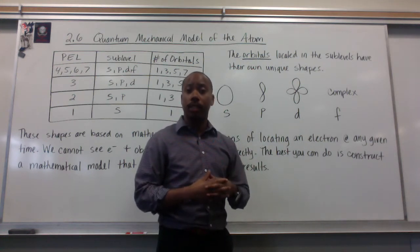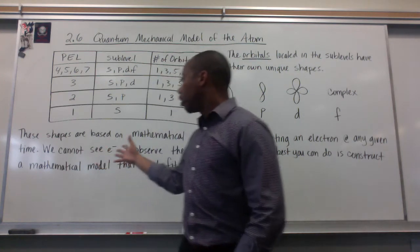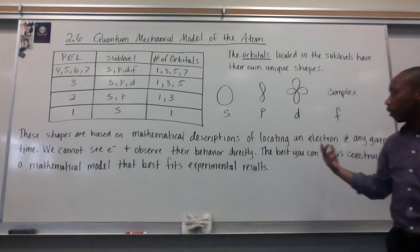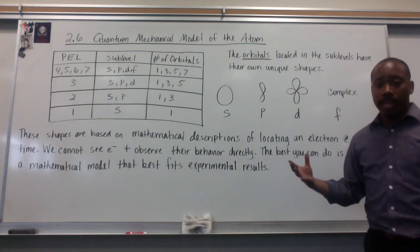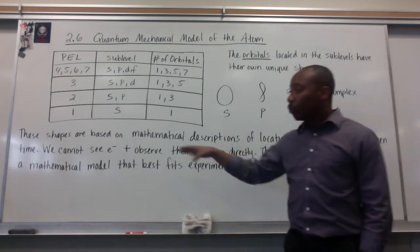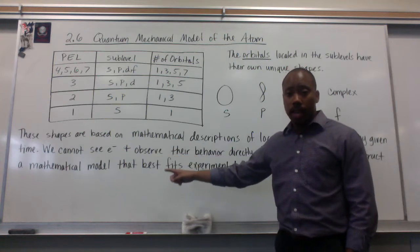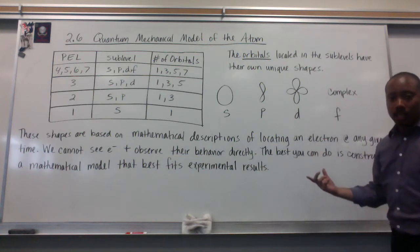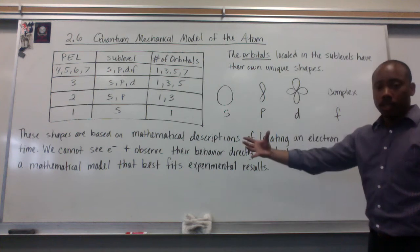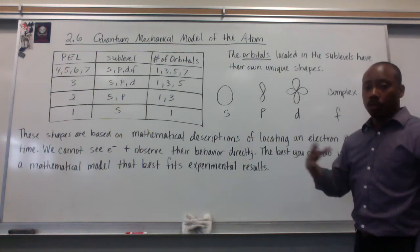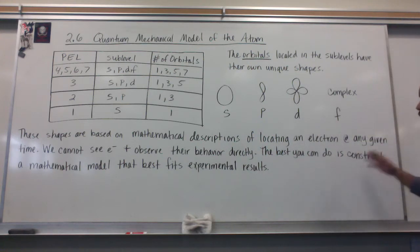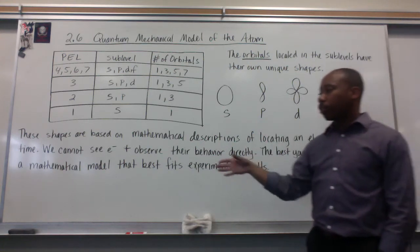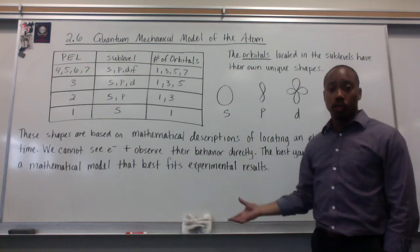You can look it up online and you'll definitely see how complex the shape is. Now, these shapes are based on mathematical descriptions of locating an electron at any given time. It has to be a mathematical description because we cannot see electrons and observe their behavior directly. We must rely on probability and mathematical hypotheses. The best you can do is construct a mathematical model that best fits your experimental results.